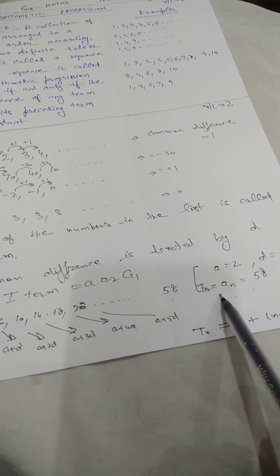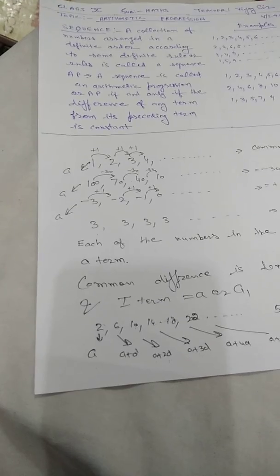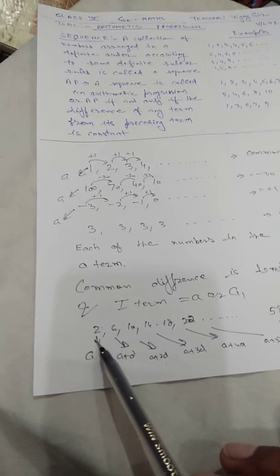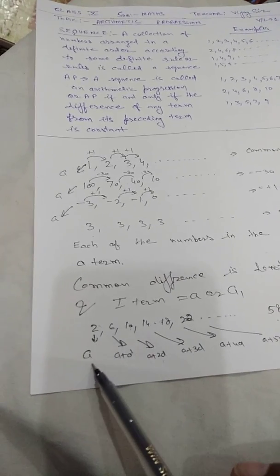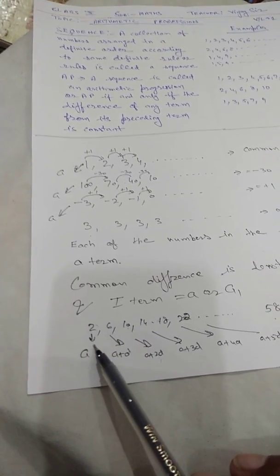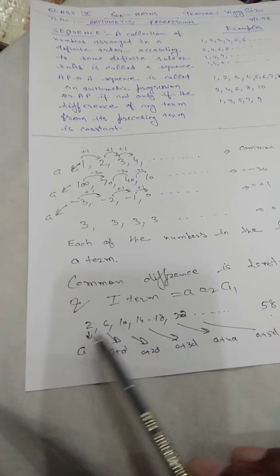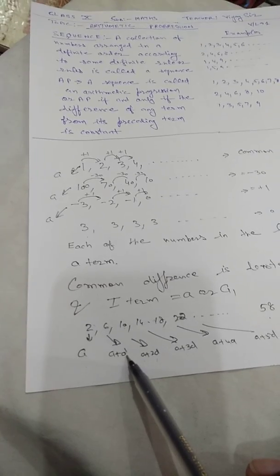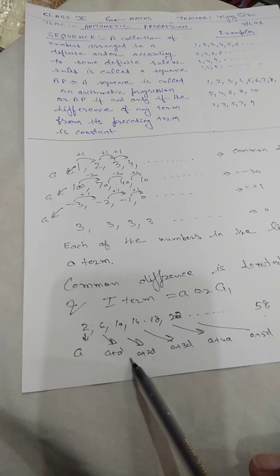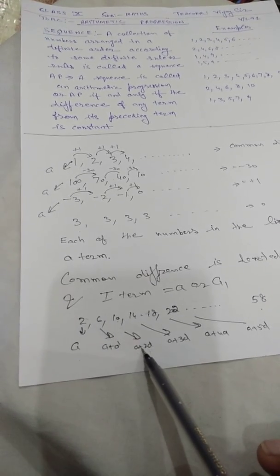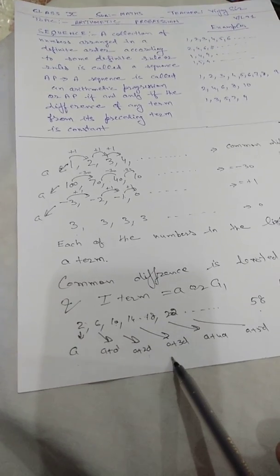In the example 2, 6, 10, 14, 18, 22, the common difference is 6 minus 2 equals 4. The second term can be written as a plus d, the third term as a plus 2d, and the fourth term as a plus 3d.